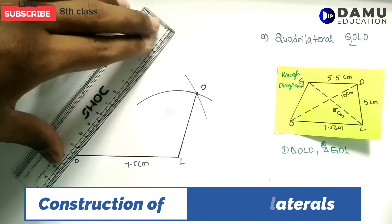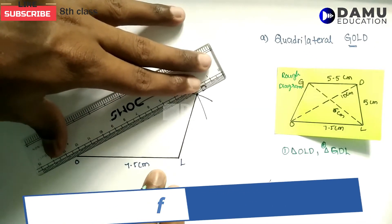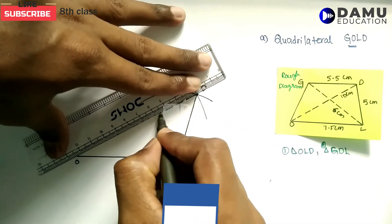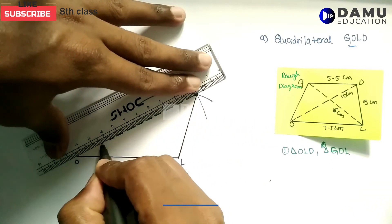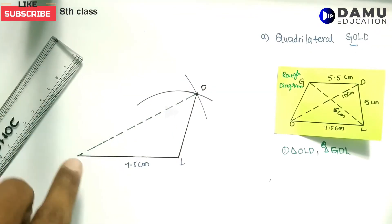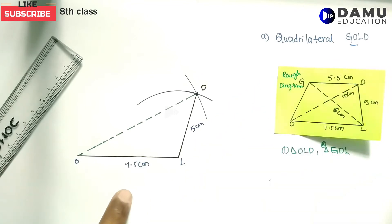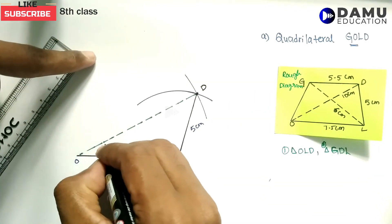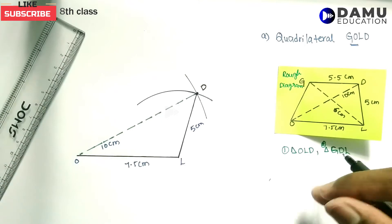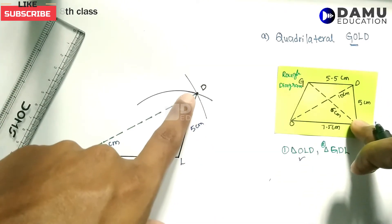Next, draw the diagonal OD. This is drawn with a hidden line. The dimension from O to this point is 10 cm, and LD is 5 cm. We have now constructed triangle OLD.